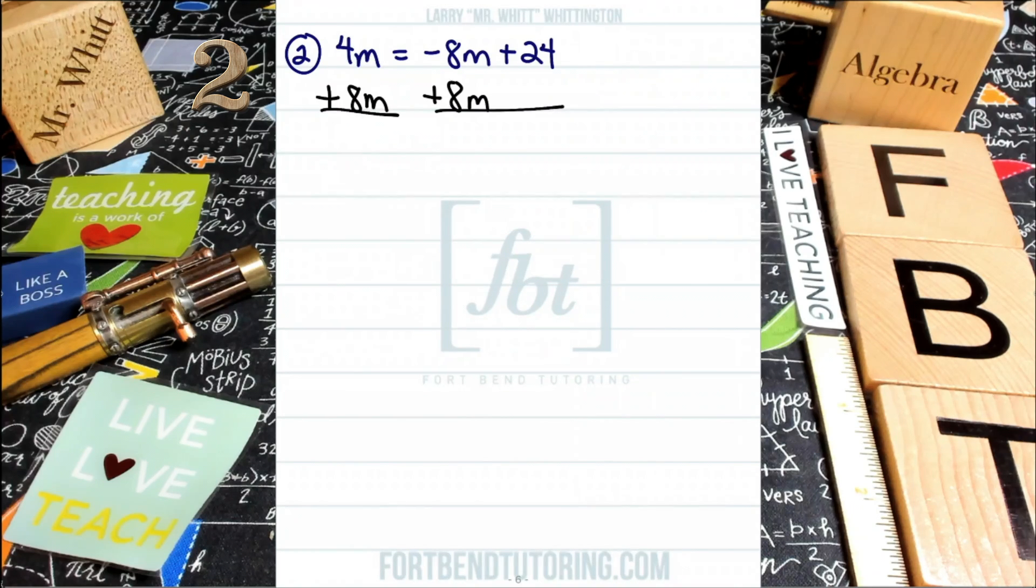On the left side, we'll be combining 4m and 8m. This is where you're going to be combining like terms. Keep in mind that like terms have the exact same variable with the exact same exponent on that variable. In this case, we do have the exact same variable, so we can go ahead and add them together. 4m plus 8m gives you 12m.